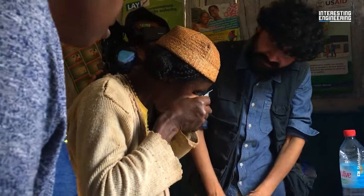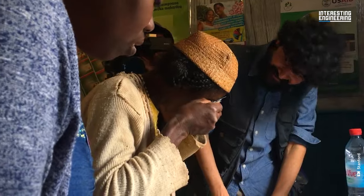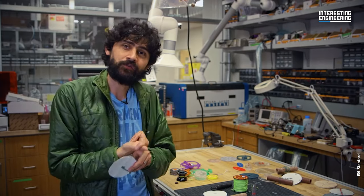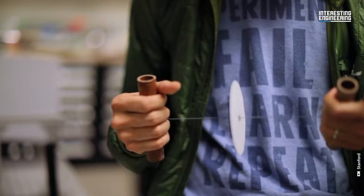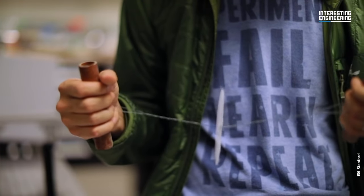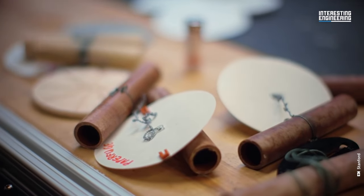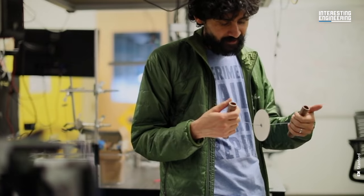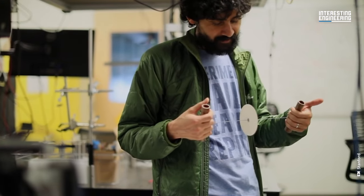Team leader Manu Prakash and his colleague brainstormed and prototyped for two weeks. Then they decided to mount a capillary of blood on a whirligig toy that had a paper disc attached to it, and they successfully centrifuged blood into layers. It was a definitive proof of concept.